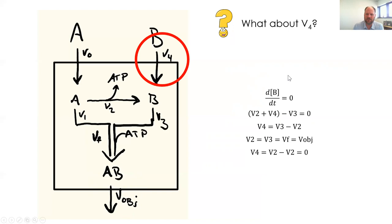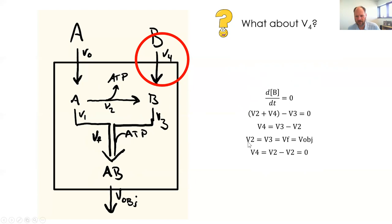What about V4? If the concentration of B is not changing over time — dB/dt equals 0 — then the production rates minus the consumption rate must equal zero. So V2 plus V4 minus V3 all have to be balanced so the amount of B doesn't change. Looking at our equivalencies, V4 must equal V2 minus V2, which equals zero. Since we've already defined V2 and V3 as equal to each other, V4 equals zero.